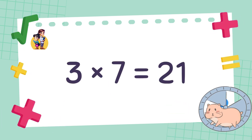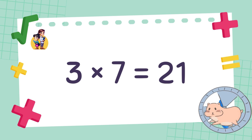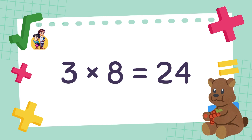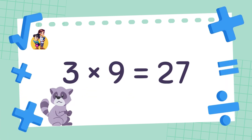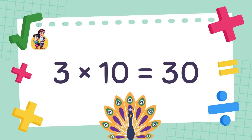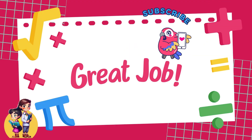3 times 7 is equal to 21. 3 times 8 is equal to 24. 3 times 9 is equal to 27. 3 times 10 is equal to 30. Great job!